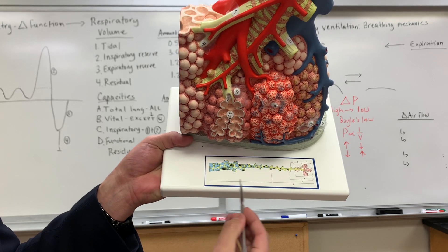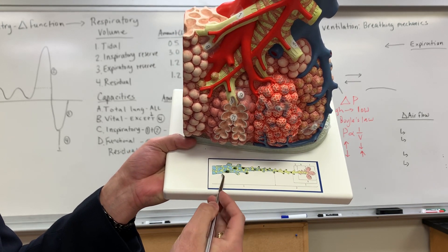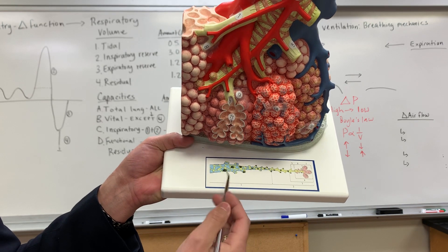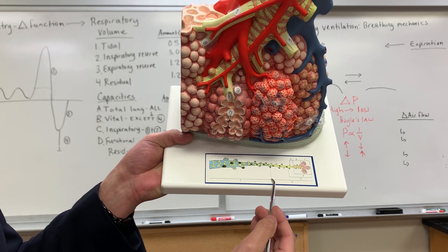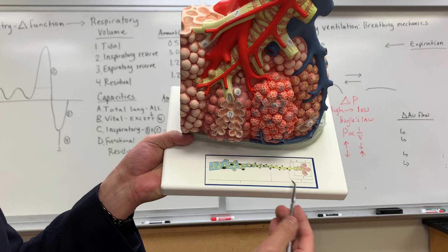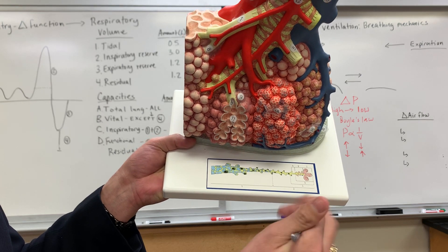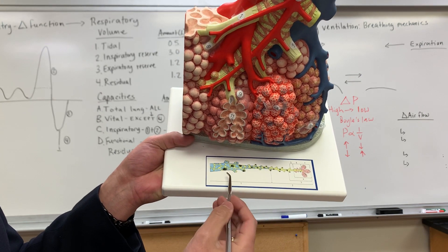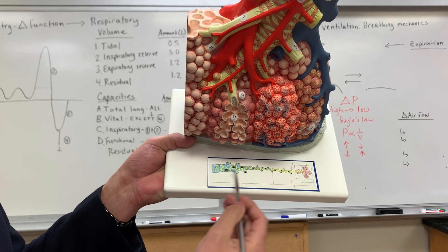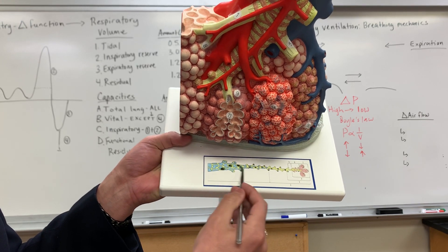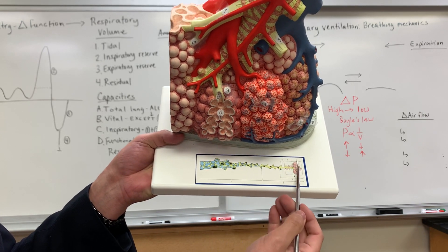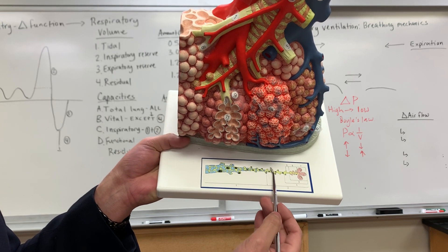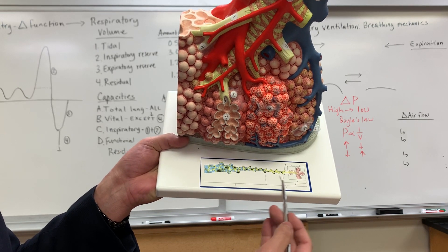Number one is what's known as the segmental bronchus. And number two — from this point on, these are the bronchioles. What's separating them is that at the end of this part there's no more cartilage. So once you go past the cartilage, you're then getting into the bronchioles.